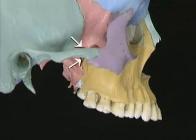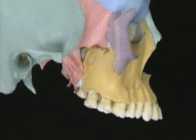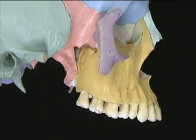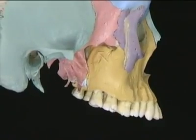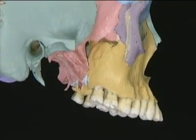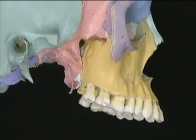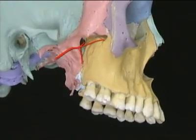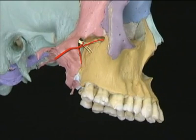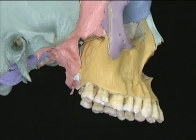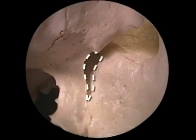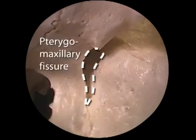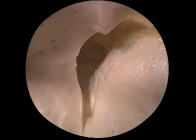The pterygopalatine fossa — to get a clear look at it, we need to remove the zygomatic arch. It lies between the pterygoid process and the hollow part of the maxilla. It's closed off medially by the perpendicular plate of the palatine bone. Above, it opens into the inferior orbital fissure. The terminal branches of the maxillary artery and all the branches of the maxillary nerve pass through it, and the pterygopalatine ganglion lies in its depths.